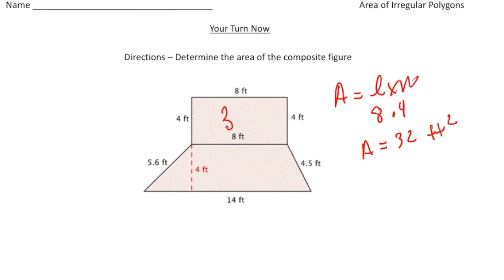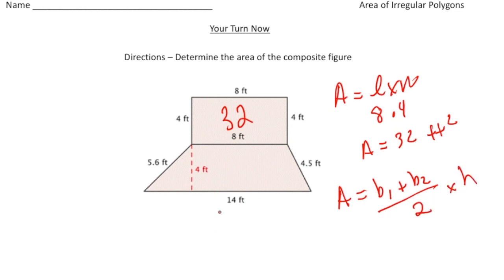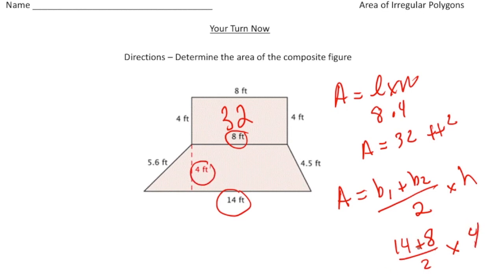I'll write 32 right inside the rectangle. Now to find the area of the trapezoid, I use the formula: base one plus base two divided by two, times the height. Base one is 14, base two is eight, and the height is four. So 14 plus 8 is 22, divided by two is 11, and 11 times four is 44 square feet. Finally, adding 44 and 32 gives us 76 square feet — that's the area of the composite shape.